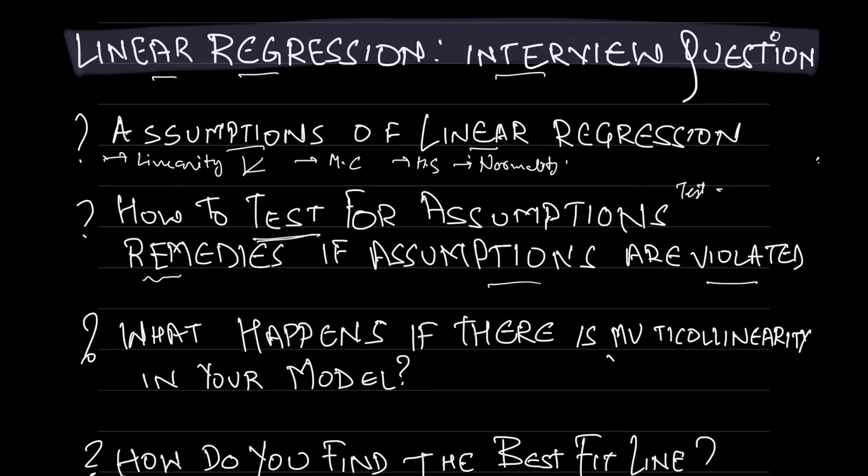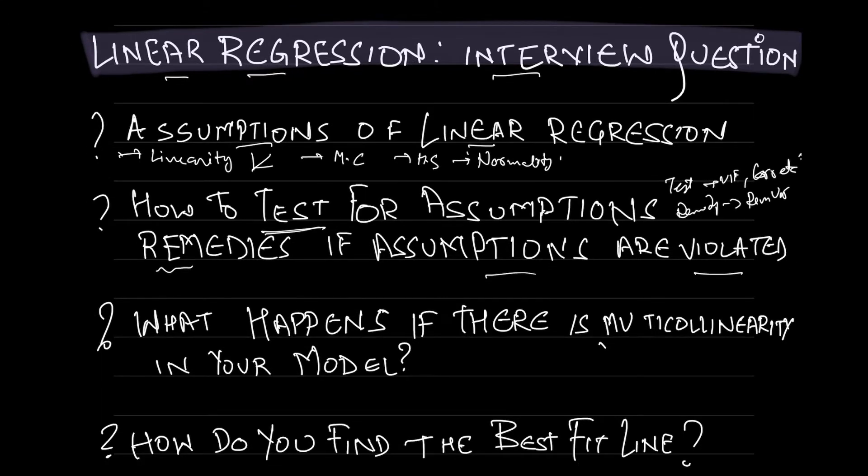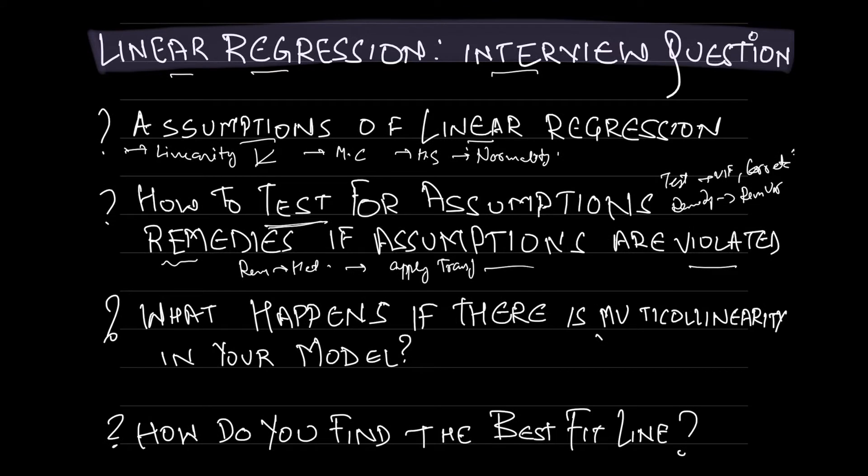For example, if we want to test for multicollinearity, we can check that using VIF or correlation, et cetera. And if multicollinearity exists, the remedy is that we can remove some of the variables. Similarly, the remedy for heteroscedasticity is that we can apply some transformation and then apply linear regression on that particular variable. I would suggest to go through the tests and remedies for all the assumptions in detail.